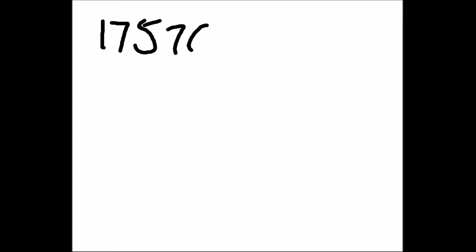Let us find the cube root of 17576. I will divide this into two parts — the last 3 digits as one part and the rest of the number as another part. In finding square root we divided into last 2 digits, but in finding cube root the last 3 digits should be one part and the rest another part. Any perfect cube which has 6 in its units place will have its cube root ending with 6, so the units digit of the cube root is 6.